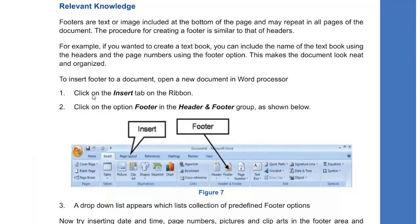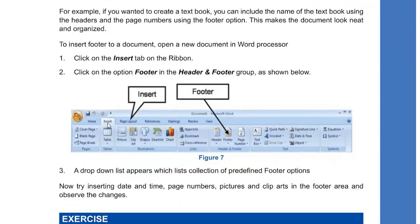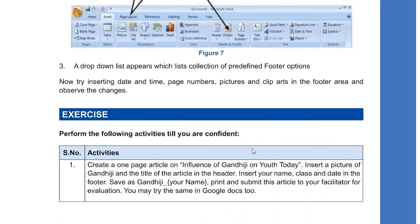To insert a footer, click on the Insert tab in your MS Word ribbon. In the ribbon, click on the tab named Insert, then you will get the group called Header and Footer. Click on Footer and you will see a drop-down list with a collection of predefined footers. You can select among them and use it in your document.